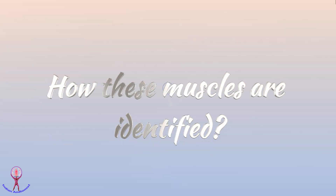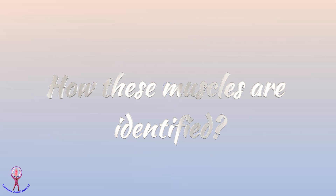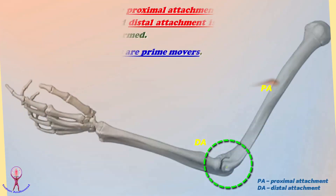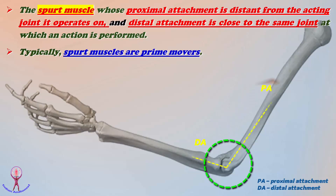Now, how are these muscles identified in the human body? According to the long axis of the acting bone, spurt muscles are also called transaxial muscles. The spurt muscle's proximal attachment is distant from the acting joint it operates on, and the distal attachment is close to the same joint at which an action is performed.